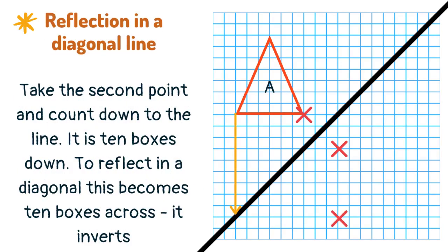Take the second point and count down to the line. It is ten boxes down. To reflect in a diagonal, this becomes ten boxes across — it inverts.